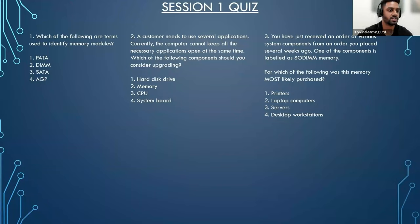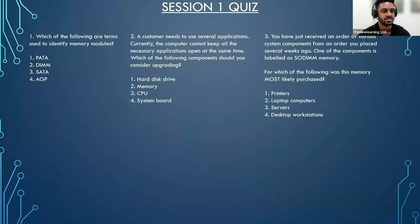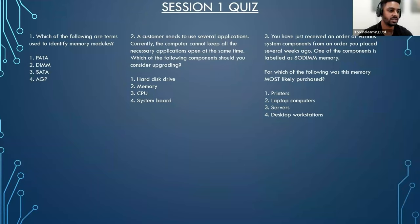For number one — which of the following are terms used to identify memory modules? If you chose option number two, you'll be correct. A DIMM, or dual inline memory module, has pins on both sides of the module, with each pin being unique. SODIMM, or small outline dual inline memory module, is a smaller version of DIMM used in laptops. The other options — PATA, SATA, and AGP — are storage device interfaces and a video expansion bus, so those are completely incorrect.